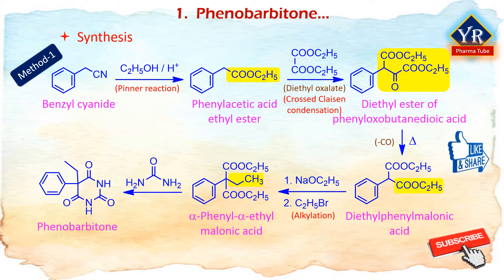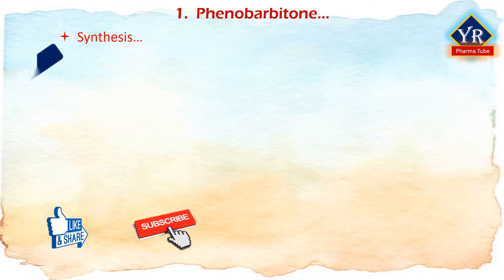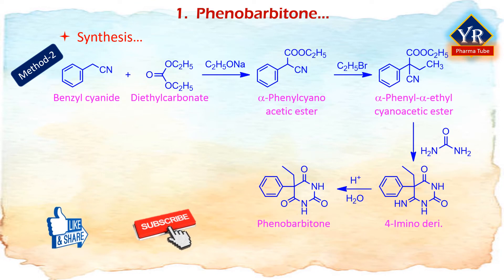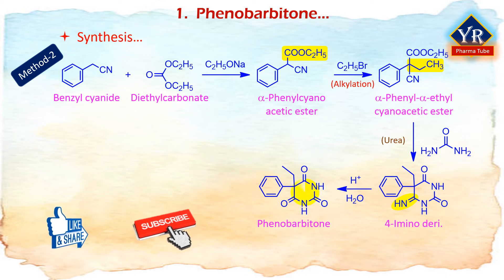Finally, a condensation reaction with urea gives the desired product, phenobarbitone. The second method of synthesis utilizes diethyl carbonate in the presence of a strong base such as sodium ethoxide to give alpha-phenyl cyanoacetic ester. Alkylation of this ester using ethyl bromide proceeds via a nitrile anion intermediate to give the alpha-phenyl-alpha-ethyl cyanoacetic ester. This product is then converted into the formamide derivative upon condensation with urea. Finally, acidic hydrolysis of the resulting product gives phenobarbitone. A new synthetic route based on diethyl-2-ethyl-2-phenyl malonate and urea has also been described.